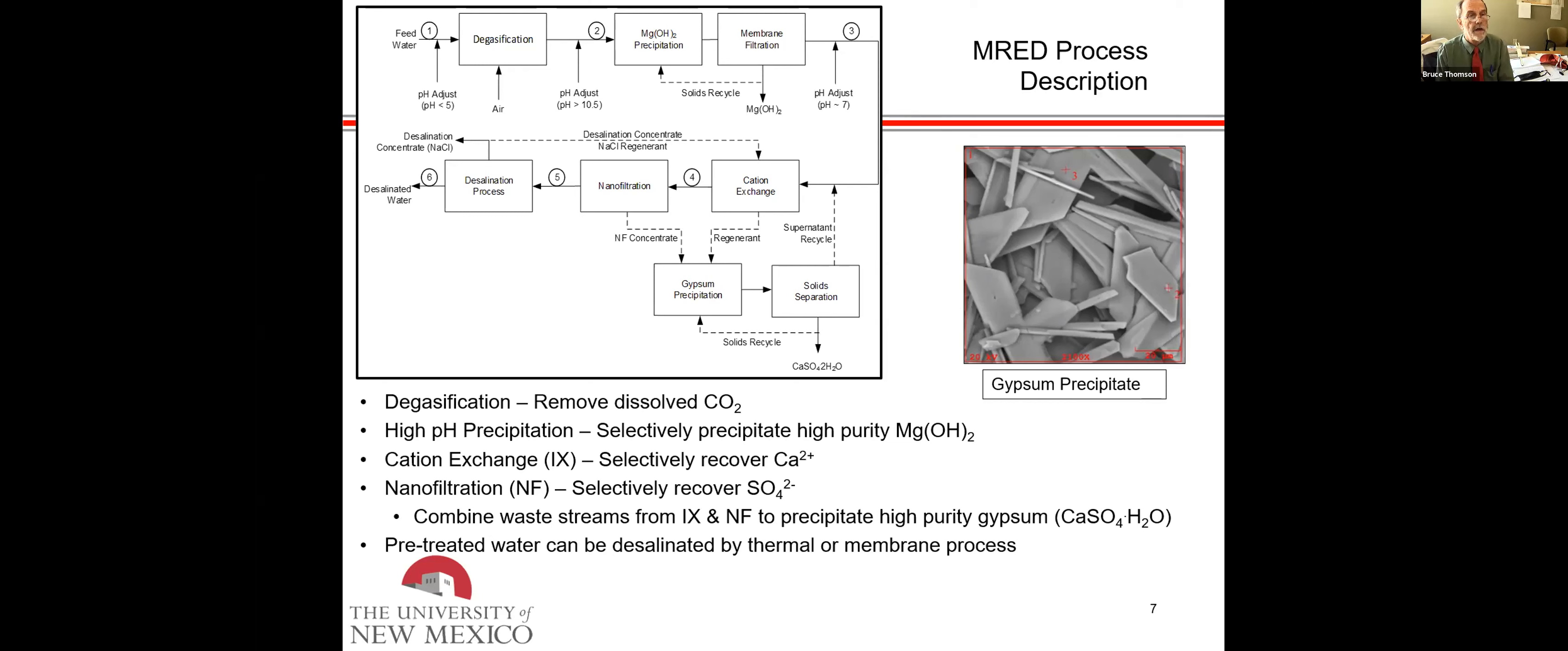The next one is a cation exchange process, and this is exactly the same as your home ion exchange water softener. It removes calcium, but it also removes magnesium, iron, and anything else you might have. So we've removed the magnesium, so the only thing left is calcium. Then it goes to a nanofiltration process, which is similar in some respects to reverse osmosis, but it will selectively recover sulfate. So now we've got a waste stream that contains calcium and another waste stream that contains sulfate.